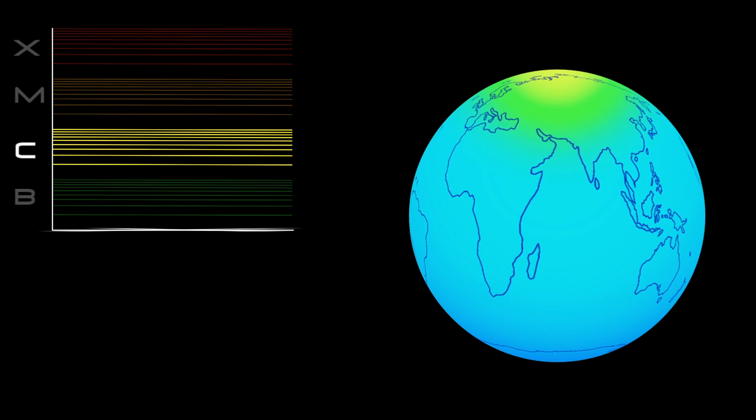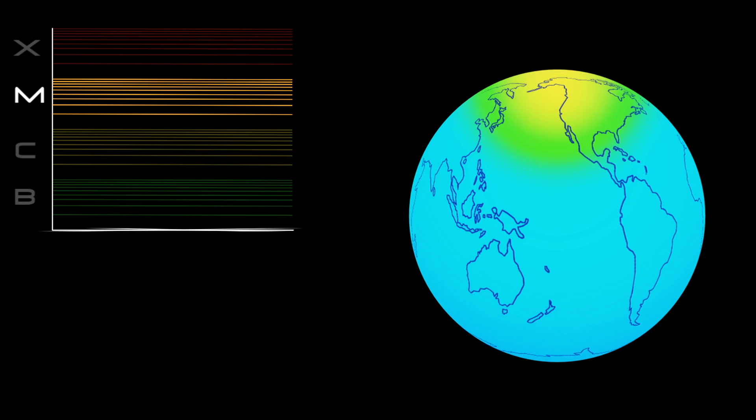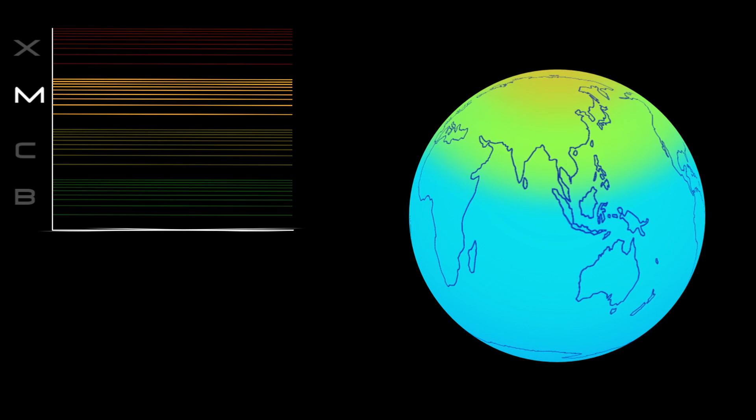C-class flares are too weak to noticeably affect Earth. M-class flares can cause brief radio blackouts at the poles and minor radiation storms that might endanger astronauts.